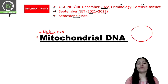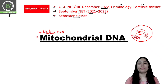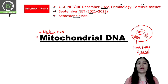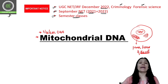Looking at cell structure, we can see a cell containing a nucleus and cell organelles including mitochondria. Mitochondria is called the powerhouse of the cell because it generates ATP. The generation of ATP takes place in the mitochondria.